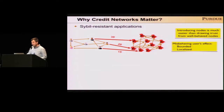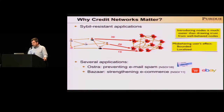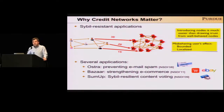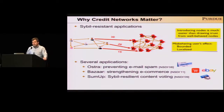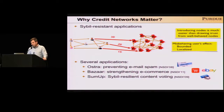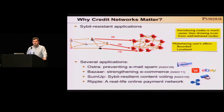Such nice properties have boosted the use of credit networks in several applications. For example, credit networks can be used to prevent spam in the email system. They can also be used to improve online reputation systems in online marketplaces like eBay. It has been shown that credit networks can also be used to create civil-resilient content voting. Credit networks have been used not only in academia, but there are also real-life deployments — one example is Ripple, which has used a credit network to create a real-life online payment system.